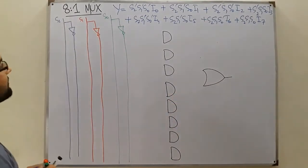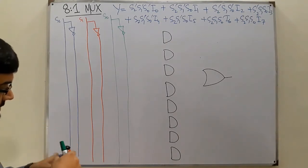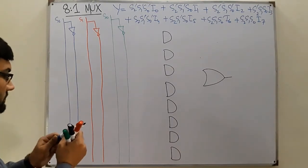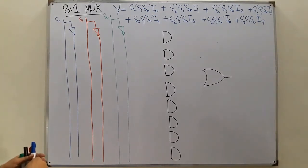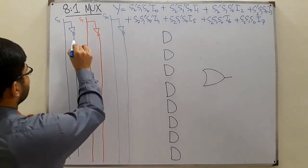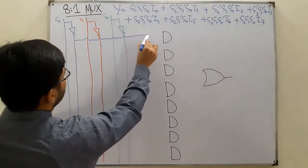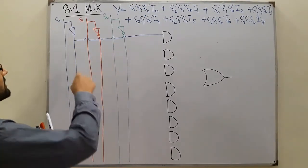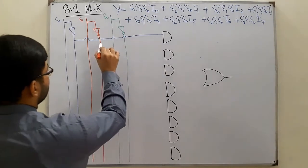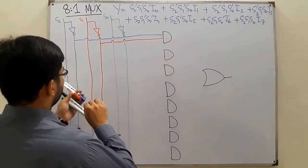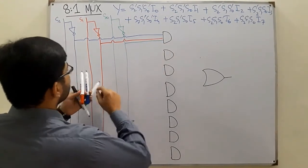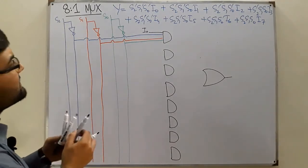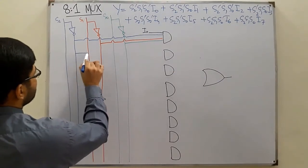To the first AND gate we connect S2's complement, S1's complement, and S0's complement — all of them complemented. You show the wire jumps in your copy; I'm using color so I don't need jumps. The final input to the first gate is I0, so you give it I0 as well. For the second gate we have S2's complement and S1's complement and S0 directly.